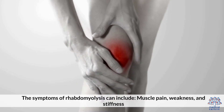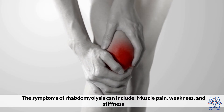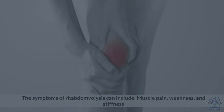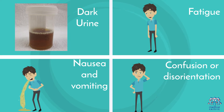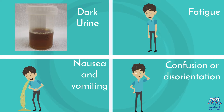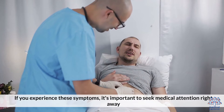The symptoms of rhabdomyolysis can include: muscle pain, weakness, and stiffness; dark urine; fatigue; nausea and vomiting; and confusion or disorientation. If you experience these symptoms, it's important to seek medical attention right away.